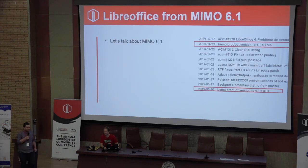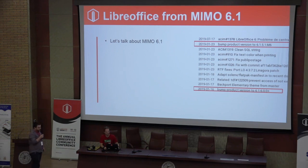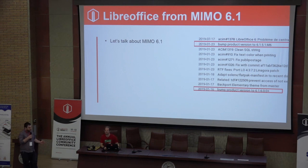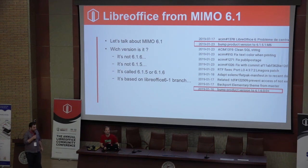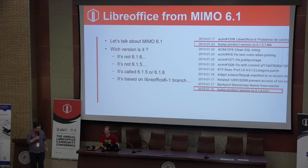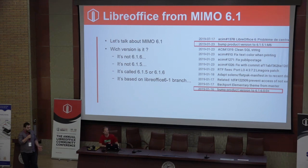So let's talk about MIMO 6.1 — it's the last test. Just about the version: it starts at 6. Which version is it? So it's not a 6.16, it's not even a 6.15 — it's still missing some commits, and it's called sometimes 6.15 or 6.16 without adding. I think there are more than 100 commits between those two versions.